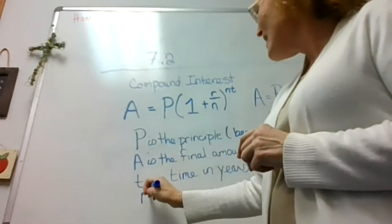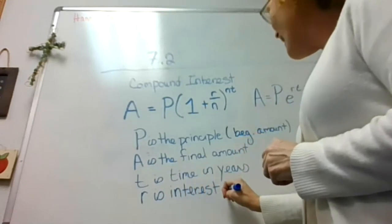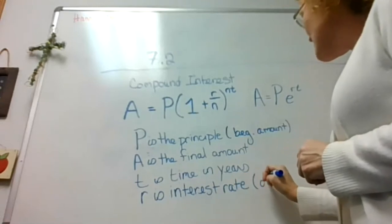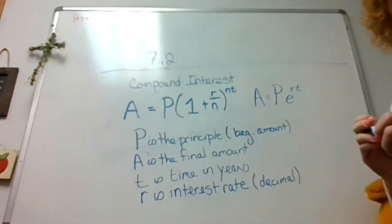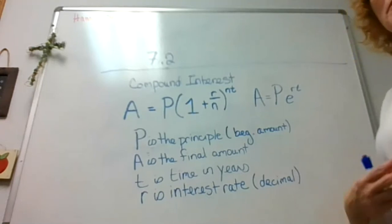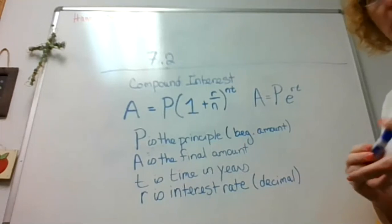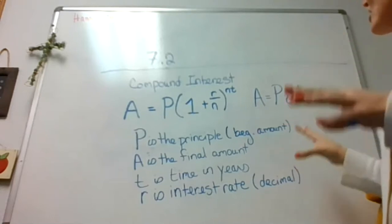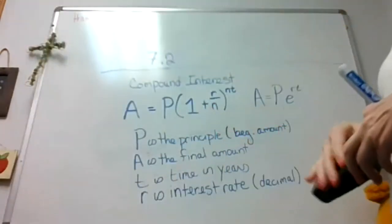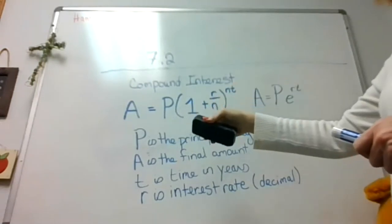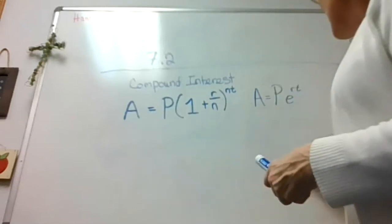The other variable that is the same in both formulas is R — the interest rate. This is the reason we did the percent-to-decimal conversion: R has to be in decimal form. So when I give you a word problem and say the interest rate is 5.2%, we're not going to plug in 5.2 — we're going to change it to a decimal before we plug it in. Now, the first formula has an N that the second doesn't, and the second has an E that the first doesn't.